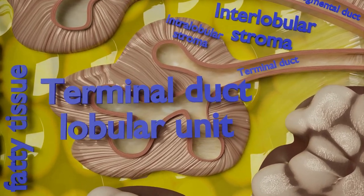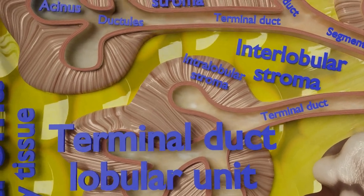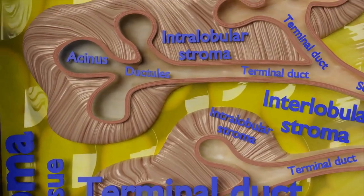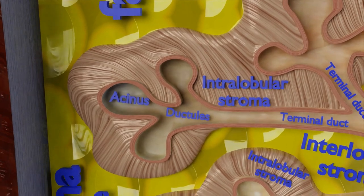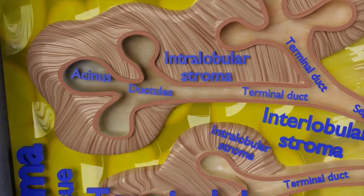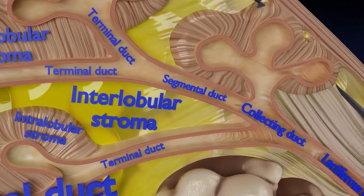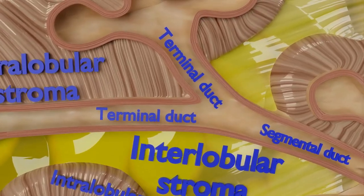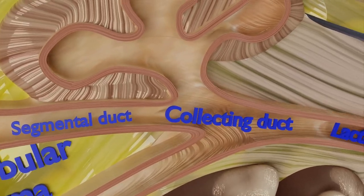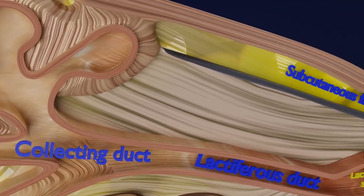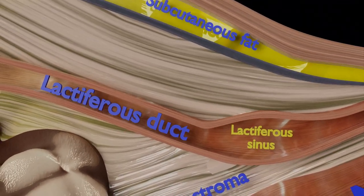The TDLU produces the fatty breast milk, giving the breast its mammary gland function. Appreciate how the intralobular and interlobular stroma surround the terminal duct lobular unit. The secretory portion of the TDLU is the lobular acinus, which drains into the terminal duct — hence the name terminal duct lobular unit. Many terminal ducts unite to form segmental ducts, which further unite to form collecting ducts, and so on to form lactiferous ducts, lactiferous sinuses, ultimately draining out of the nipple as 15 to 20 outlets.